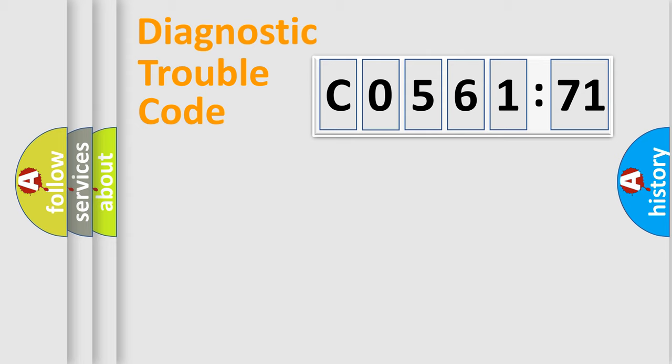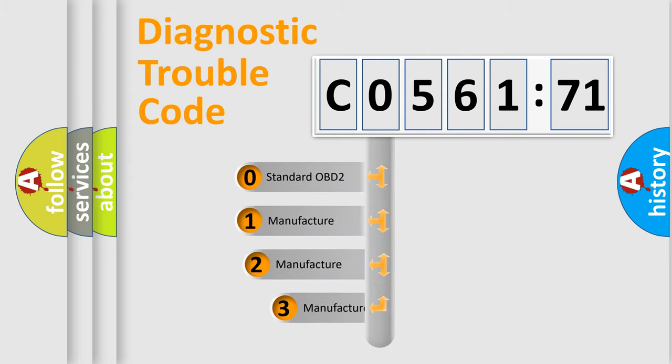Powertrain, Body, Chassis, Network. This distribution is defined in the first character code.